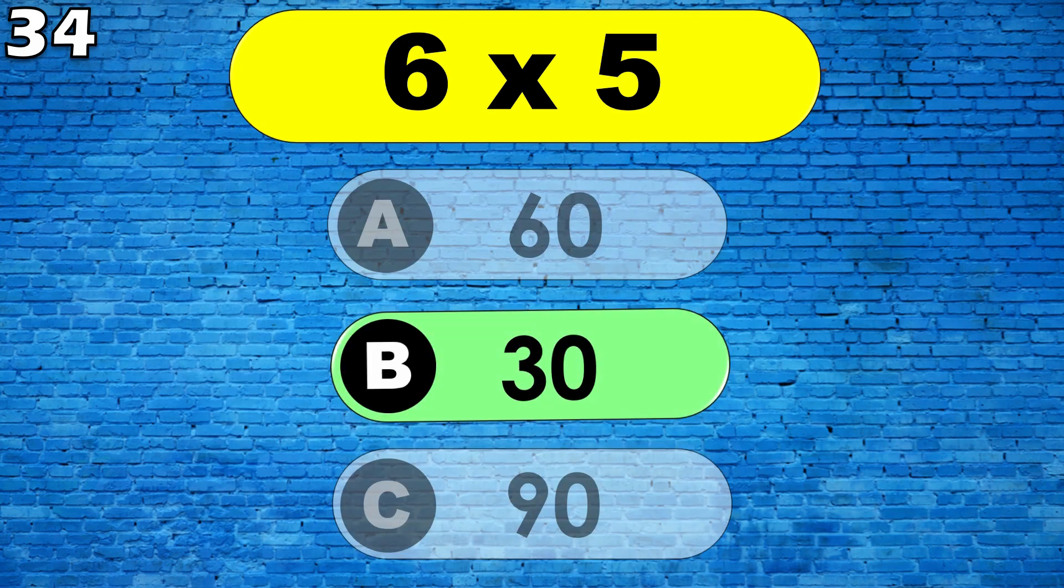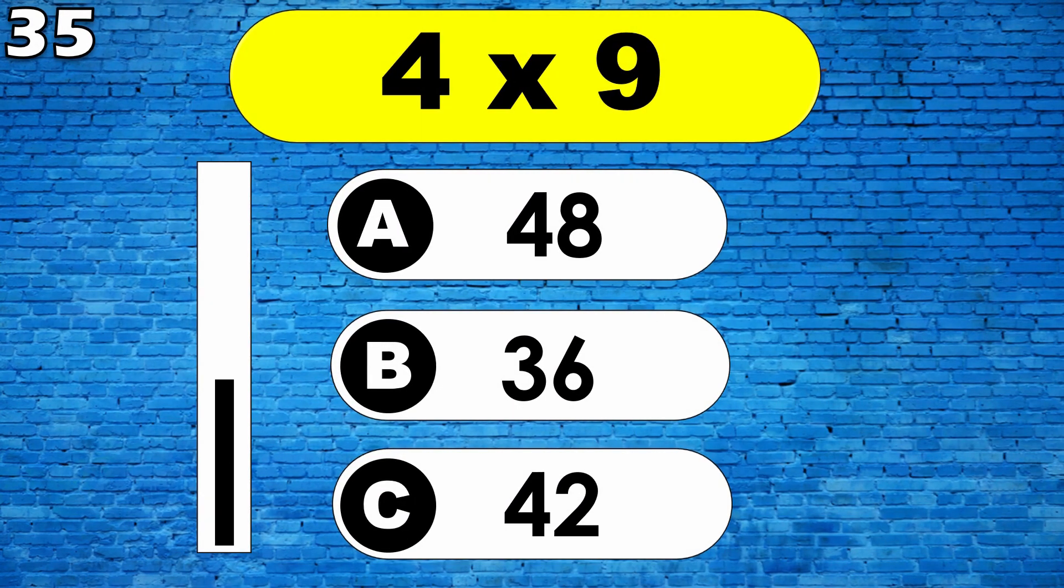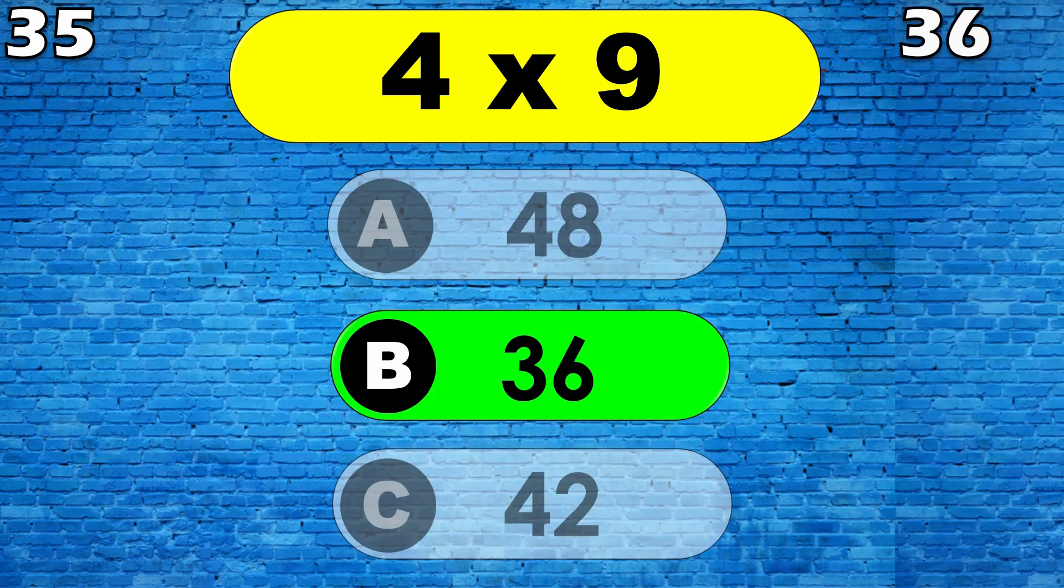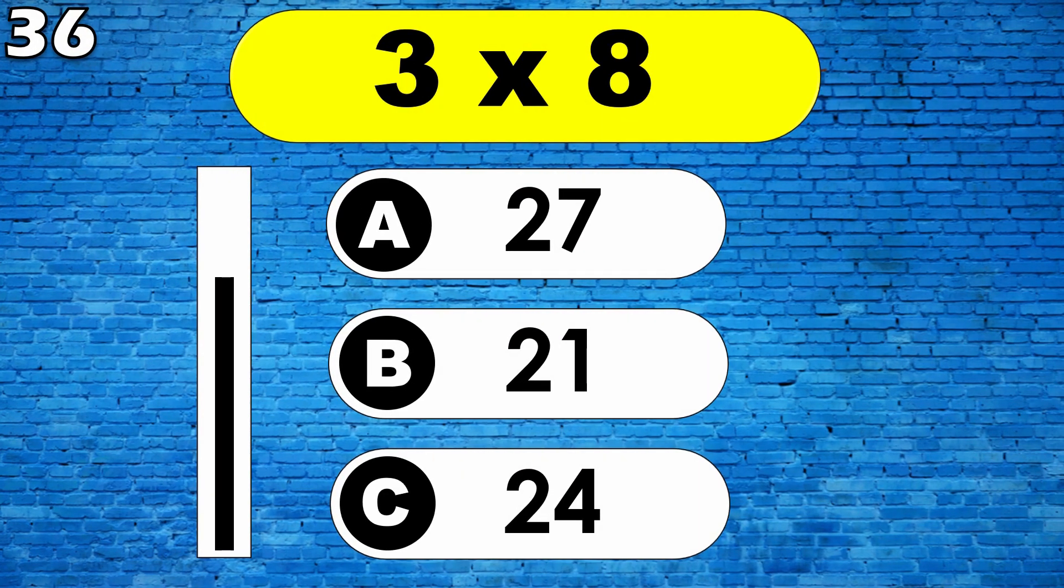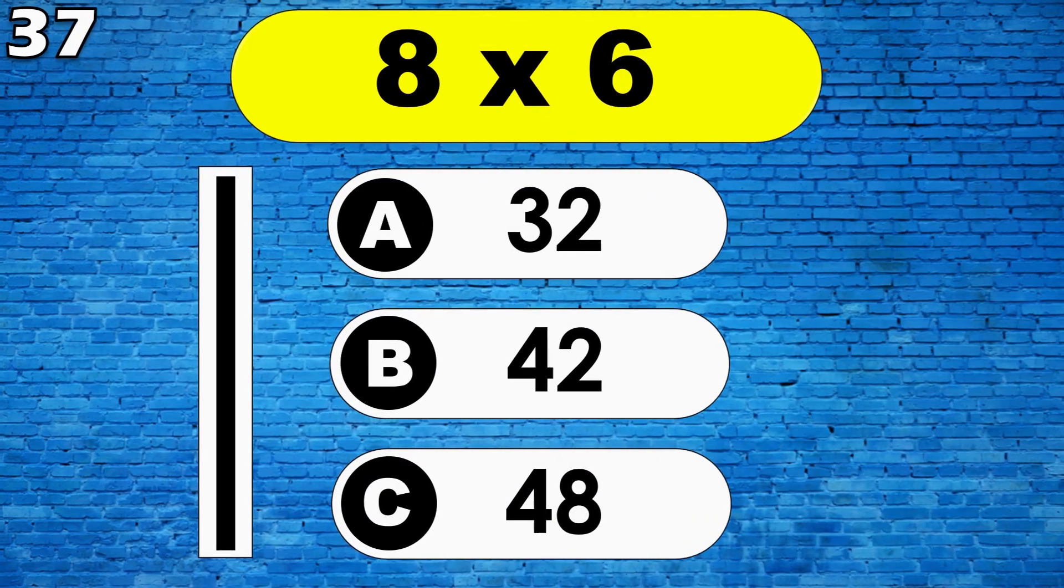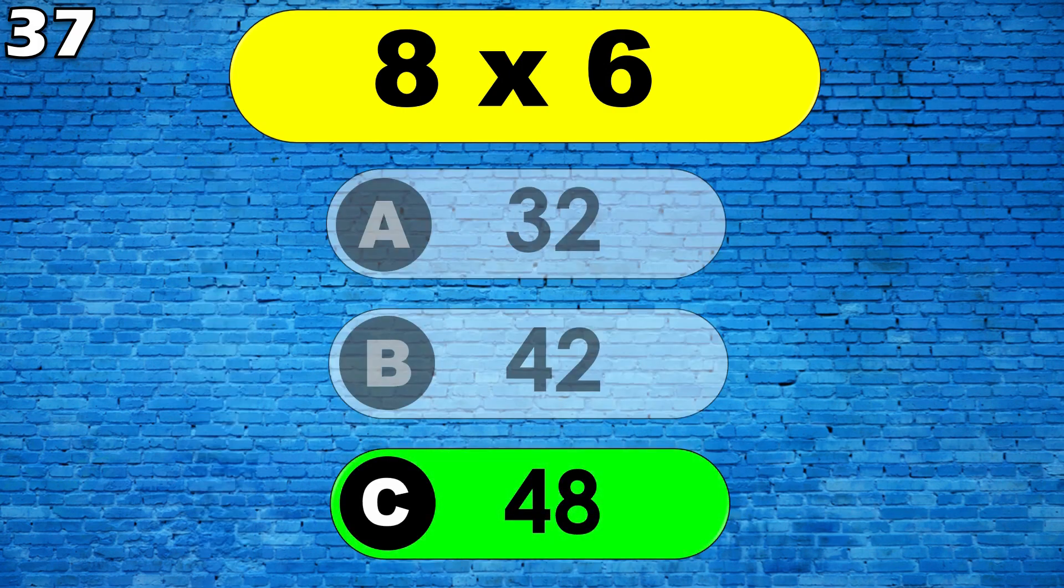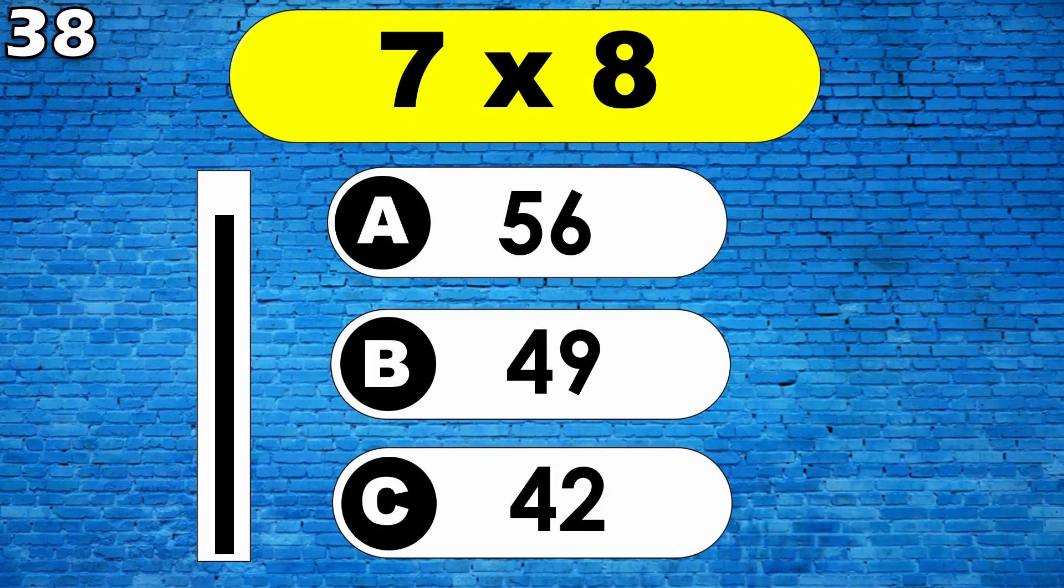Four nines are thirty-six. Three eights are twenty-four. Eight sixes are sixty-eight. Seven eights are fifty-six.